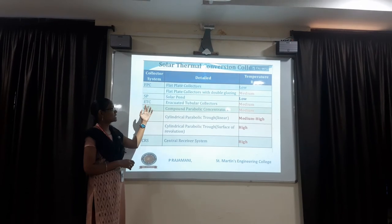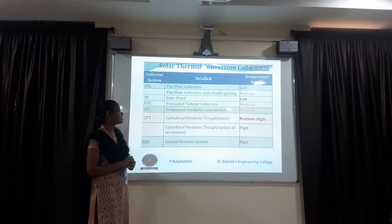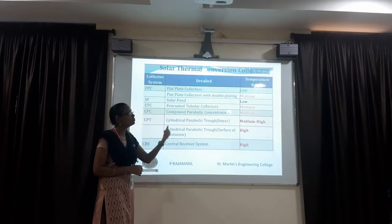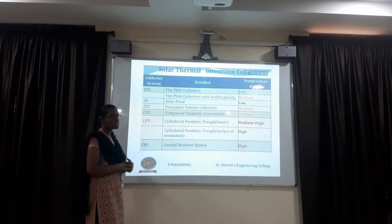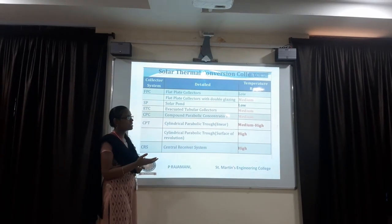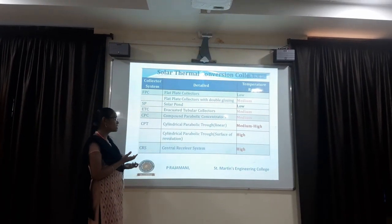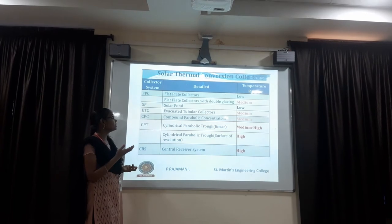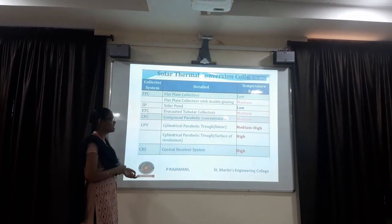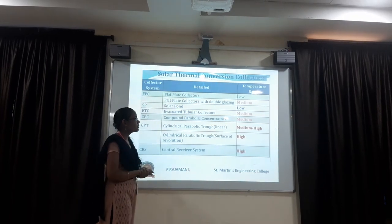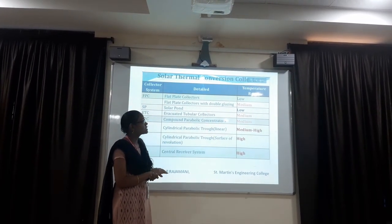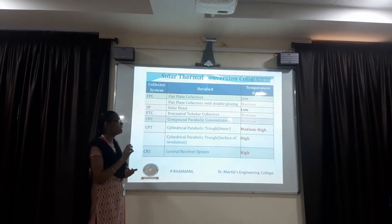ETC means evacuated tube collectors. The temperature range is equal to medium. We use the ETC solar collectors in medium temperature areas. Next, CPC - compound parabolic concentrator - temperature range is also equal to medium. The collector used depends upon the temperature range of the area.